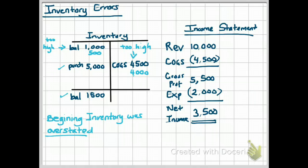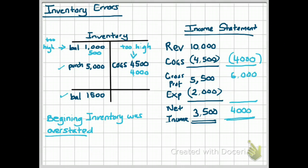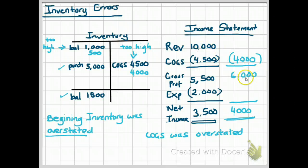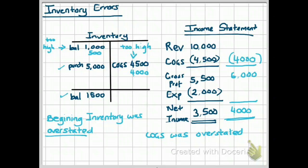Now let's look at the effect of this error on our income statement. Our cost of goods sold should have been $4,000, which means our gross profit should have been $6,000 — that's $4,000 subtracted from revenue. After subtracting $2,000 of expenses, our net income should have been $4,000. So the effect is that cost of goods sold was overstated by the amount of the error — $500.